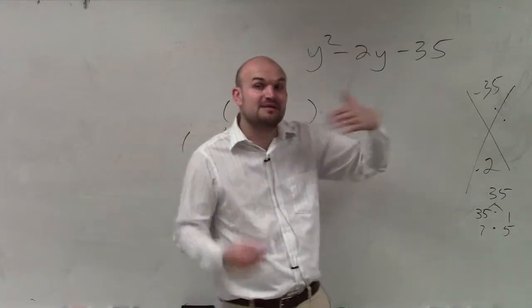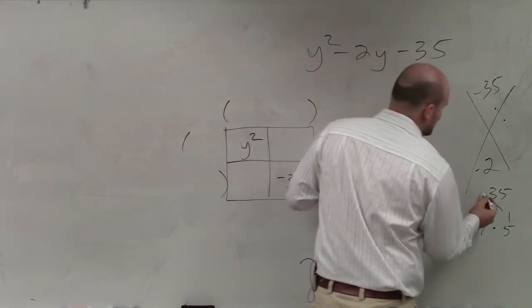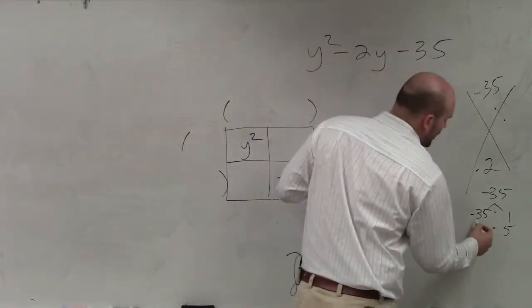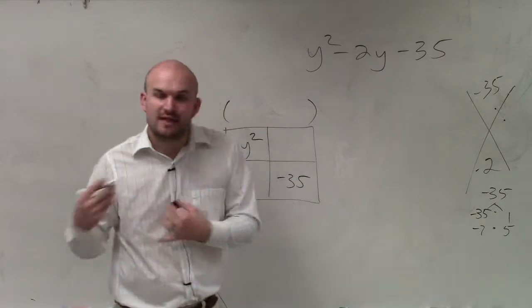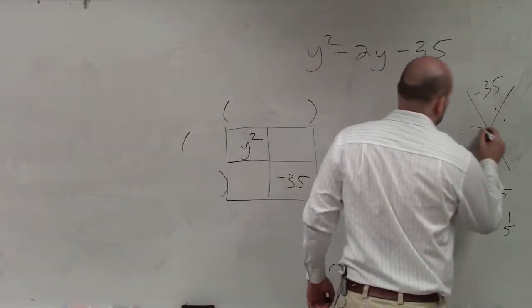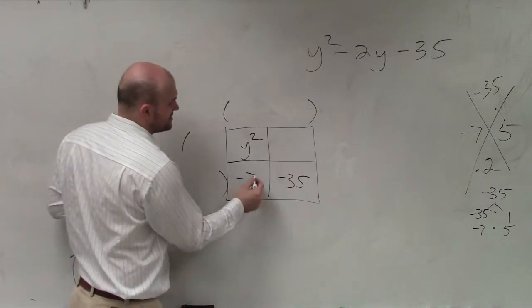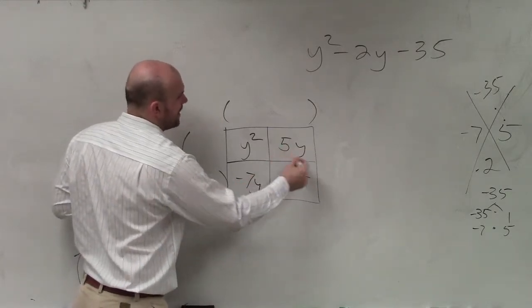Now it has to be negative, that means one of the numbers, one of my factors, has to be negative. And since they add to give me a negative number, the larger of the two has to be negative. Therefore, you guys can see that the only factors I have are negative 7 and 5. So I can simply just write negative 7y and 5y.